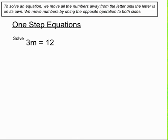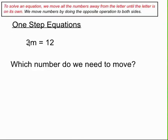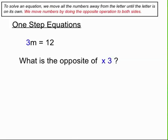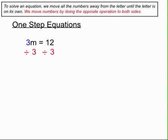The next example asks us to solve 3m equals 12. To get the letter on its own we need to move that 3. When the 3 and the m are beside each other, there is an invisible multiply sign between them, so that 3 is multiplying the m. The opposite of multiply by 3 is divide by 3, and we do that to both sides of the equation. On the left-hand side, the multiply by 3 and the divide by 3 cancel each other out, leaving the letter on its own. On the right-hand side, 12 divided by 3 is 4.